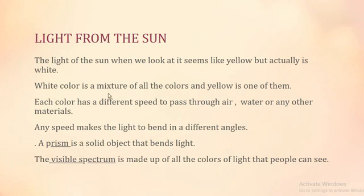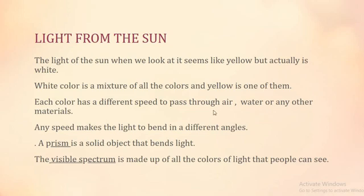When white light passes through rain, which is water, it is bent. So the other colors - like yellow, blue, red, and green - separate in the sky and we can see them. Each color's different speed makes the light bend at different angles.